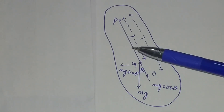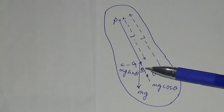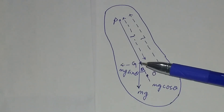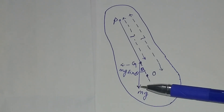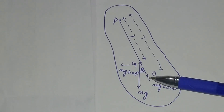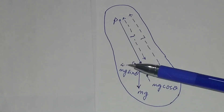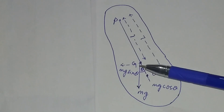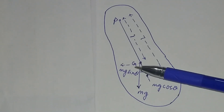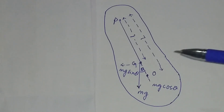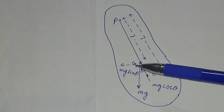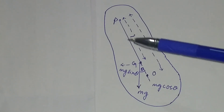When you tilt the bar pendulum or the compound pendulum, the weight mg will act in the downward direction. This component will be equal to mg cos theta and this component will be equal to mg sin theta. And mg sin theta will be the driving force. The torque is the cross product of force and displacement, so torque will be equal to mg sin theta into small l.